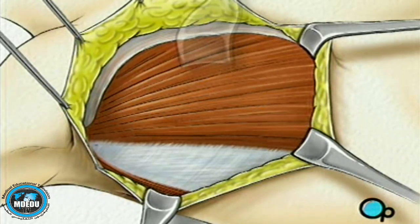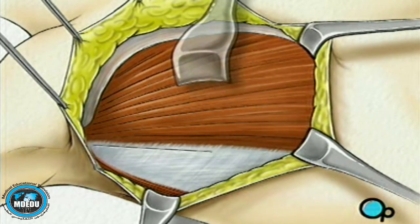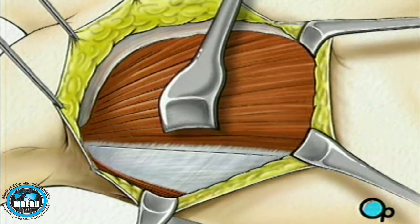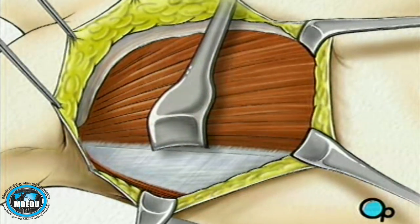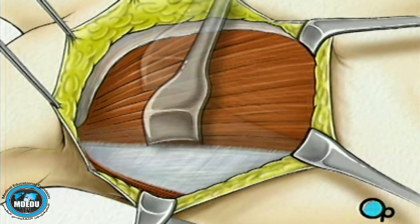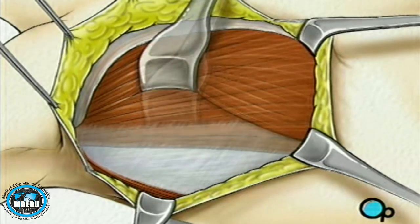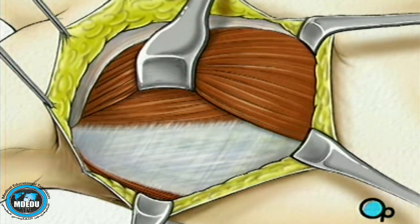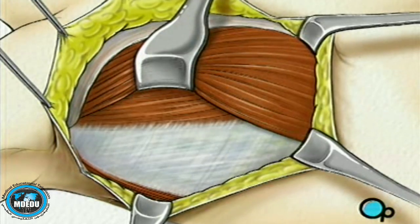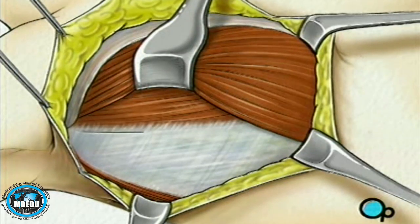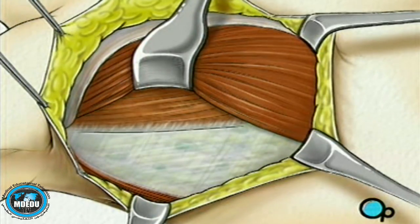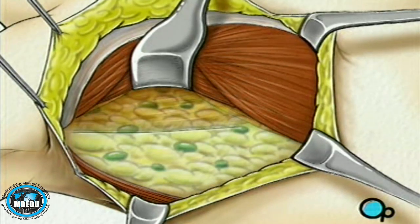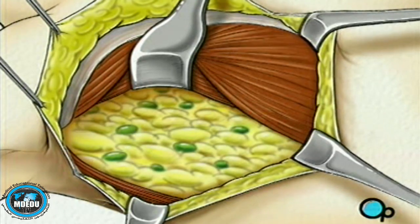The surgeon will pull this muscle temporarily aside, exposing the next layer of muscle, the pectoralis minor. The surgeon will move this muscle aside as well, creating a clear view of the surrounding fatty tissue. Within this fat deposit lie lymph nodes, lymph vessels, blood vessels, and nerves.